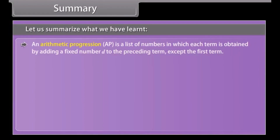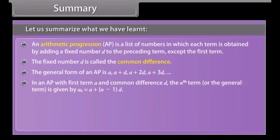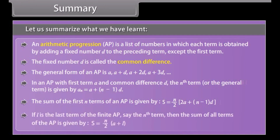Let us summarize what we have learned. An arithmetic progression is a list of numbers in which each term is obtained by adding a fixed number D to the preceding term except the first term. The fixed number D is called the common difference. The general form of an AP is A, A plus D, A plus 2D, A plus 3D, and so on. The Nth term is given by AN equals A plus (N minus 1) into D. The sum of the first N terms is S equals N upon 2 into (2A plus (N minus 1) into D). If L is the last term, then S equals N upon 2 into (A plus L).